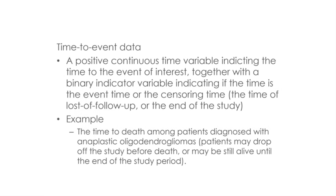Lastly, time-to-event data usually involves a positive continuous time variable indicating time to the event of interest, together with a binary indicator variable indicating whether the time recorded is the event time or a censoring time. Censoring time includes time of loss to follow-up or time at the end of the study. An example is time to death among patients diagnosed with anaplastic oligodendroglioma, where a patient may drop off the study before death or may still be alive until the end of the study.